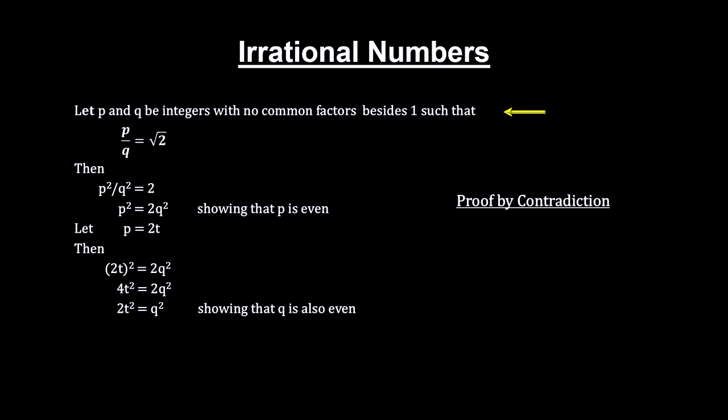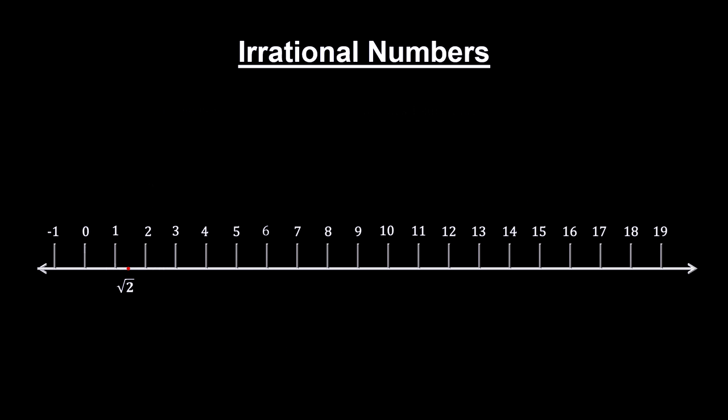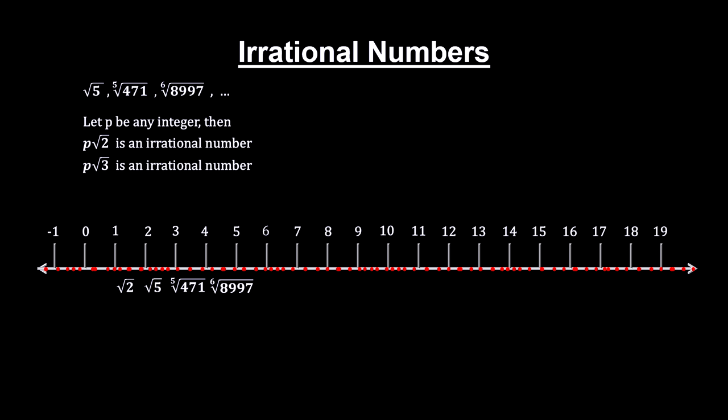But our stipulation was that they had no factors in common except for the number one. We have a contradiction. And it shows that the statement, the square root of two can be expressed as a rational number, is false. Therefore, it cannot be expressed as a rational number. In fact, the nth root of any number that isn't a perfect n square is irrational. Add to that the fact that any irrational times irrational will be irrational, and you can see that the set of irrational numbers is infinite.